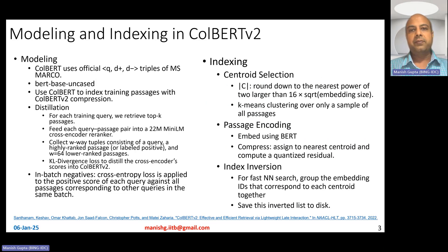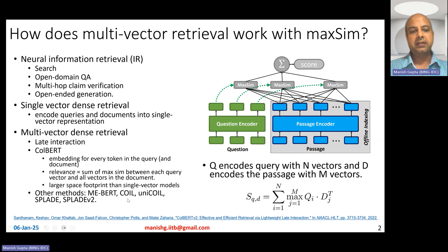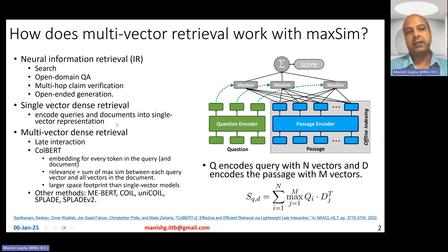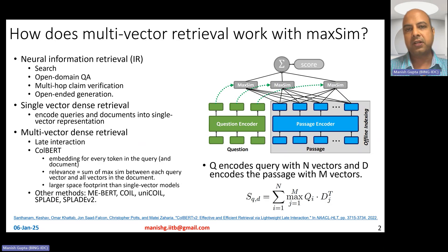Multi-vector dense retrieval methods have the problem of a large-scale index footprint compared to single vector models. In single vector models, you index only one vector per document. However, in multi-vector methods, you have to index one vector per token in those documents. So if your documents have 100 tokens, your index size becomes roughly 100x larger.